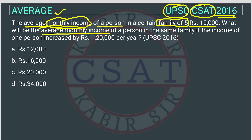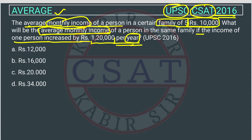He is asking for the average monthly income of a person in the same family, if the income of one person increased by Rs. 1,20,000 per year. So here they have given the increment in per year, but the original average is given monthly.